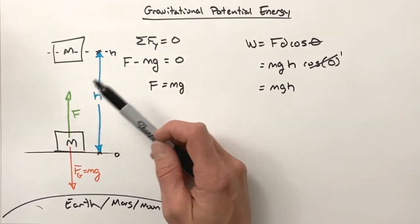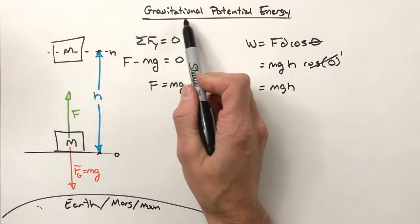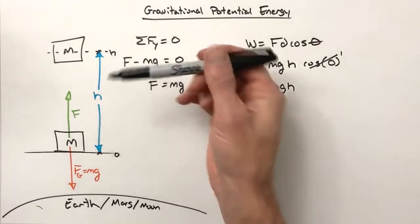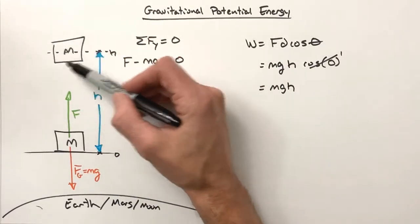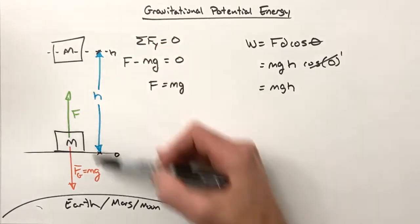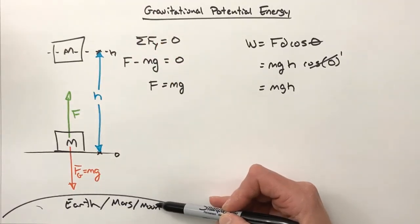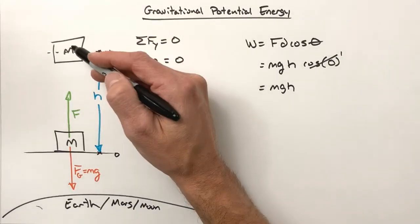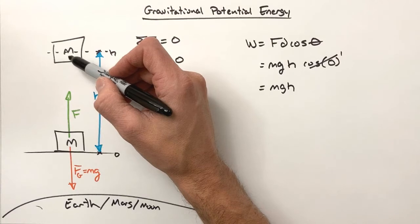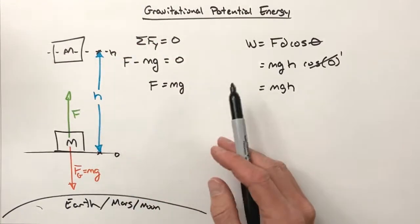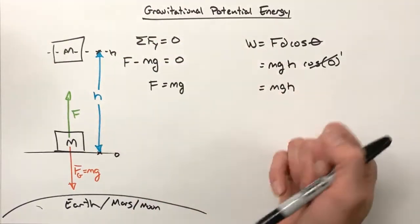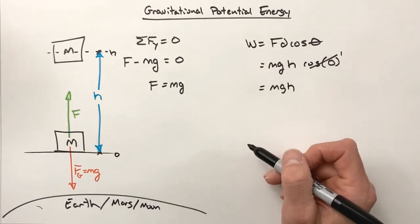So the energy has to be coming from somewhere, and it's coming from the gravitational field. We stored this energy, we put it away like money in a bank. That energy was stored in this field between the block and the Earth, or Mars, or Moon, or wherever the kid from fifth period was. And that energy is now going to turn back into kinetic energy as this block falls downward, speeding up. And so we arrive at this real weird idea of gravitational potential energy.